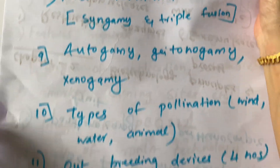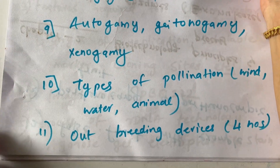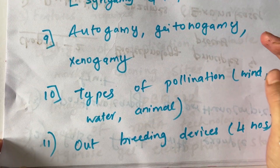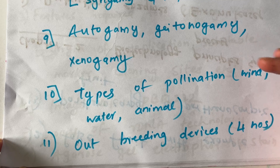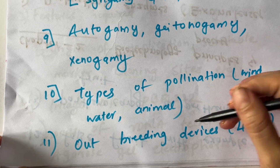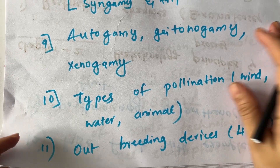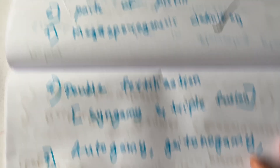Types of pollination: wind and water pollination. Outbreeding devices — four types — will also be covered.